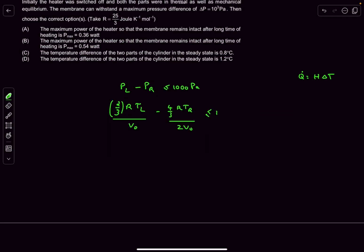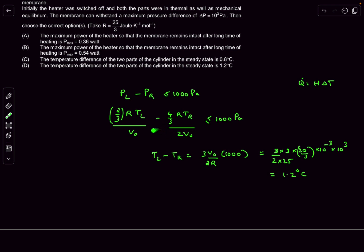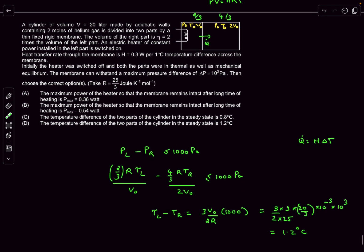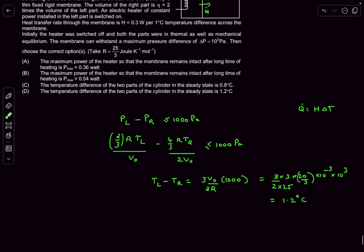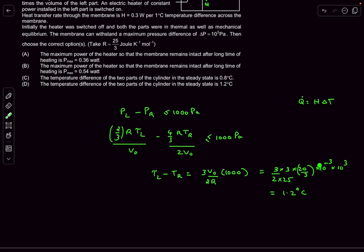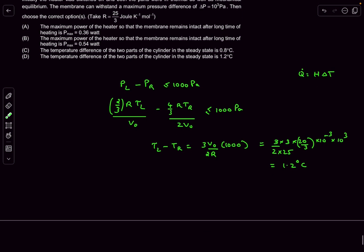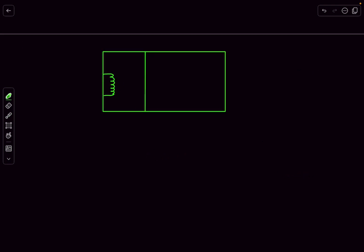Taking the expressions for PL and PR and applying PL − PR ≤ 1000 Pa, with V₀ = 20/3 liters converted to cubic meters, after performing the calculations we find that the maximum possible temperature difference between the two sections is 1.2°C.